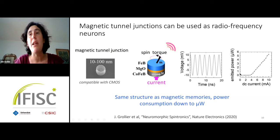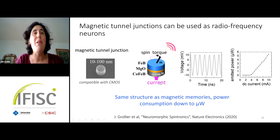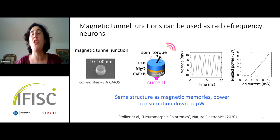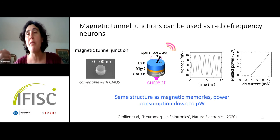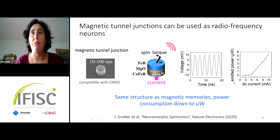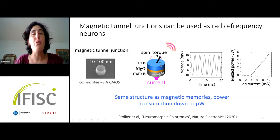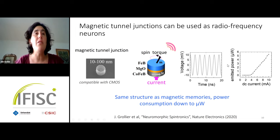By plotting the emitted microwave power as a function of the input DC current, we get a nonlinear function very similar to the rectified linear unit. This means the device can mimic a small microwave neuron: it takes information encoded in a current, applies a nonlinear function, and emits the result as a microwave that can be broadcast. At 500 nm lateral size we need several milliamps, but scaling down to 10 nm brings consumption down to microwatts — suitable for neuromorphic chips.